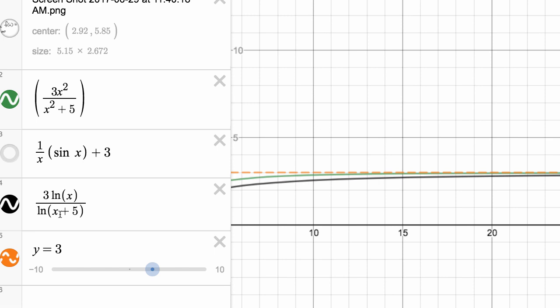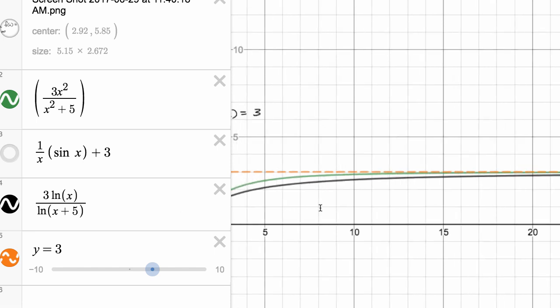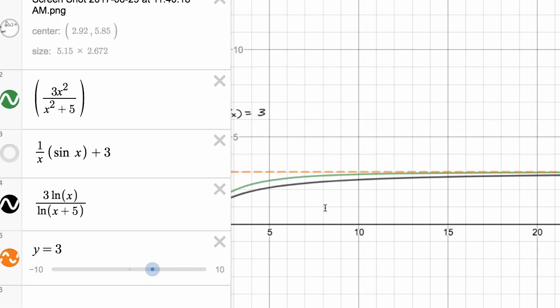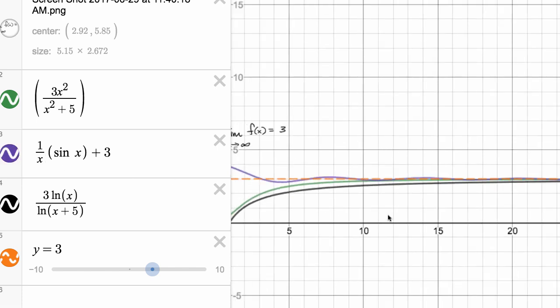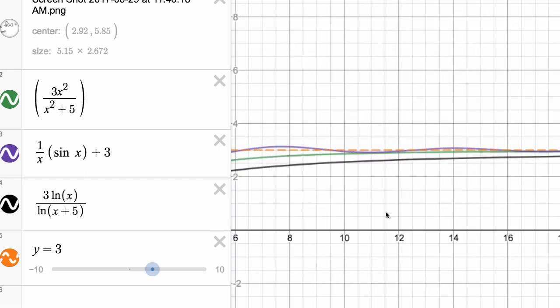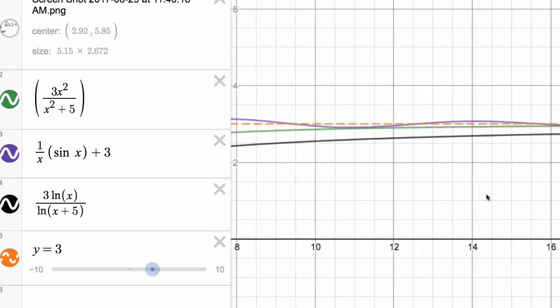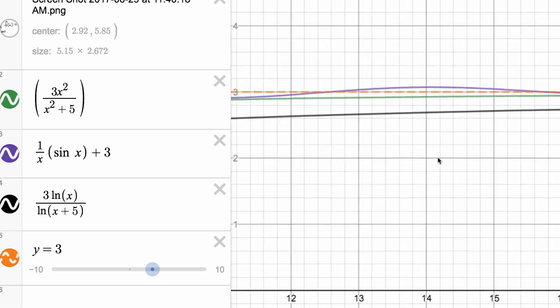And as we've talked about in other videos, you could even have things that keep oscillating around the asymptote as long as they're getting closer and closer and closer to it as x gets larger and larger and larger. So for example, that function right over there. Let me zoom in. So let's zoom in when, let's say when x is equal to 14, we can see that they're all approaching three. The purple one is oscillating around it. The other two are approaching three from below.